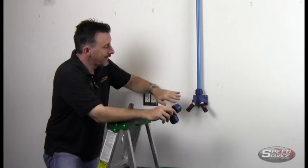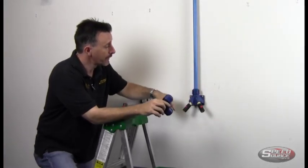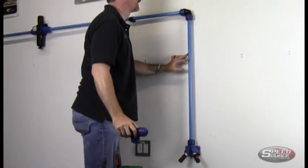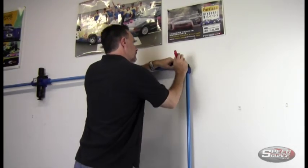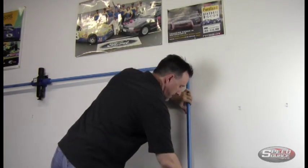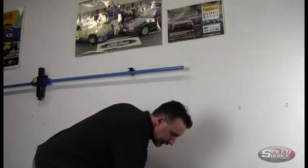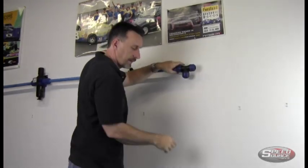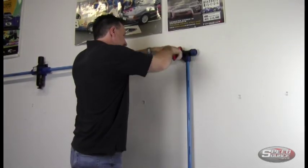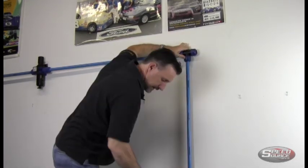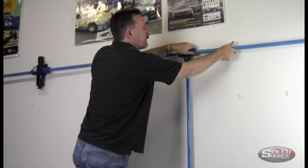Alright guys, we've got everything installed and looking good. Let's say we've changed our mind, or maybe at a later date we want to add more airlines to our shop. This system makes it real easy. What we're going to do is come up top and change out this L for a T, grab our next section of pipe and extend it on, and take it down to wherever you need it.